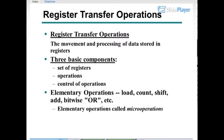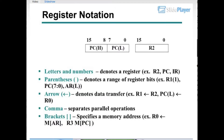Register transfer operations involve the movement and processing of data stored in registers. There are three basic components: a set of registers, operations, and control of operations. Elementary operations include load, count, shift, add, bitwise OR, etc. These elementary operations are called micro operations.